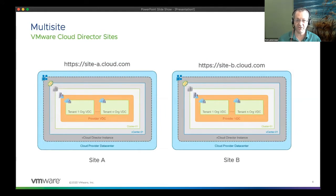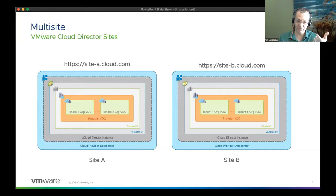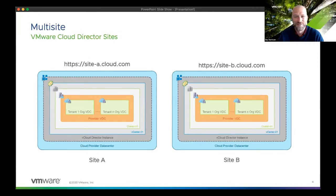Looking at the topology of how Cloud Director sites are built, multi-site starts at the cloud provider data center level — each VCD instance site. But then within those constructs, we see the tenant organizations. The next grouping of association is between those tenant organizations in each site. This is helpful for providers rather than giving customers two different URLs — like site-a.cloud.com for the US org and site-b.cloud.com for the EMEA org — which is not a great experience for tenants. Multi-site allows you to bring this together.